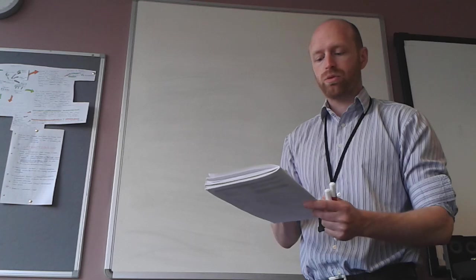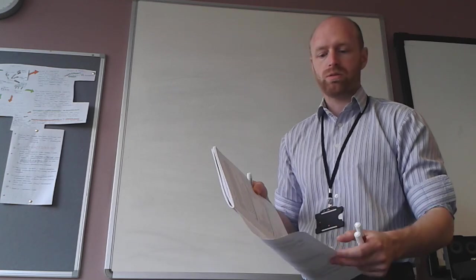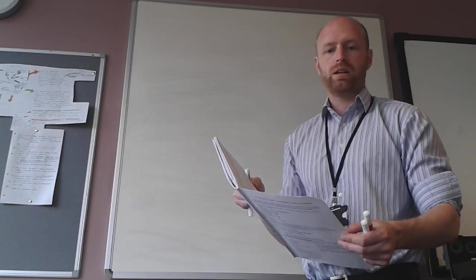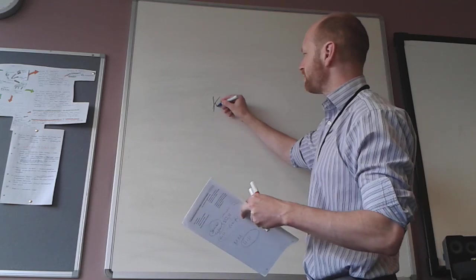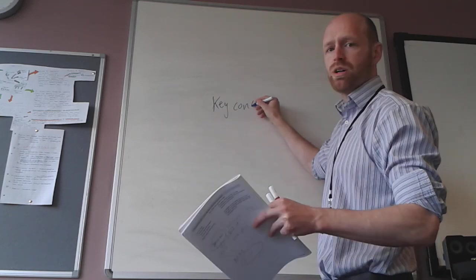So for example, key concepts and key trends refers to the nuclear family as one of the key concepts. You can obviously use your knowledge of functionalism to describe the role of the family and Marxism. And you can also talk about feminists, post-modernists and the new right and the nuclear family. So you've got to bring in evidence across those four areas of the family topic, the key concepts and key trends section.